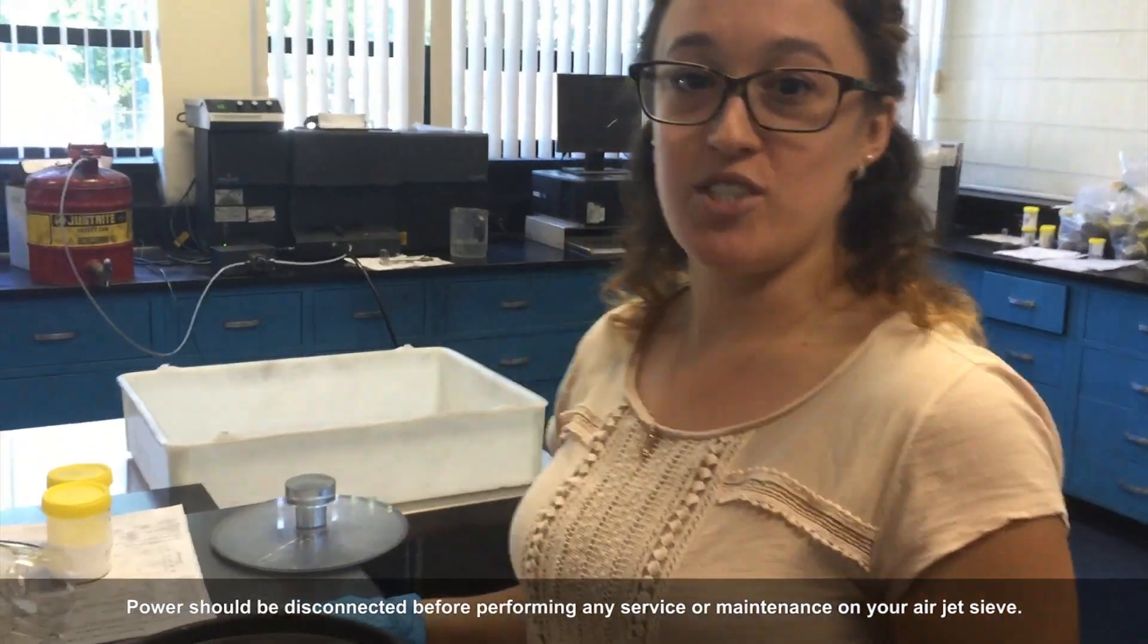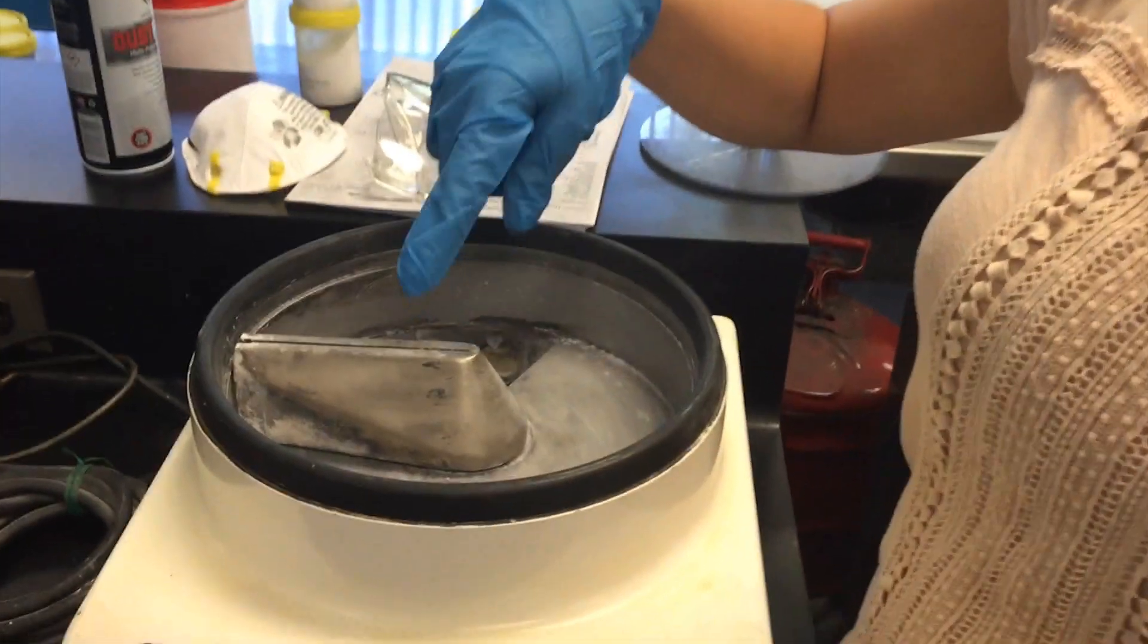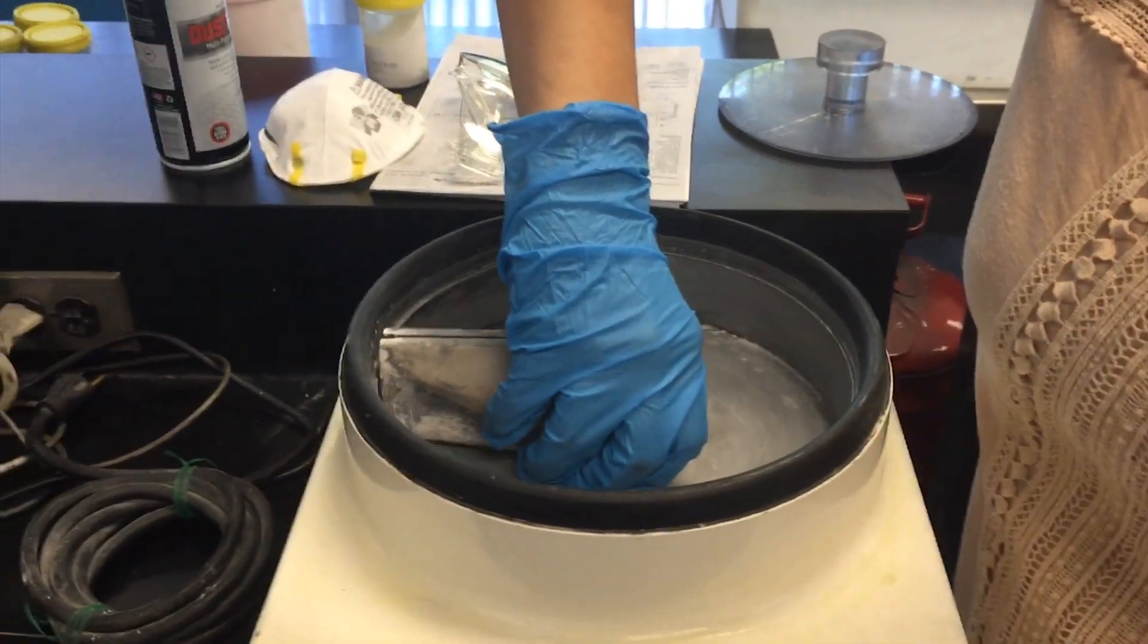First things first, we're going to double check the shear pin. In order to do that, we're going to remove the wand. In order to remove the wand, we're going to pull it straight up.